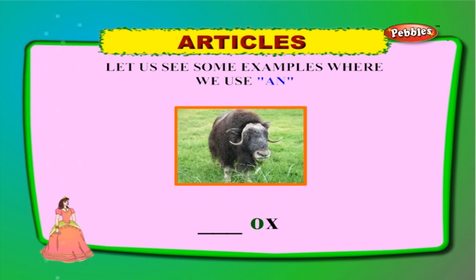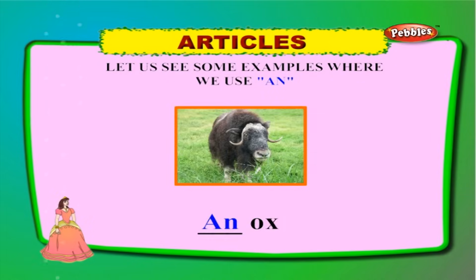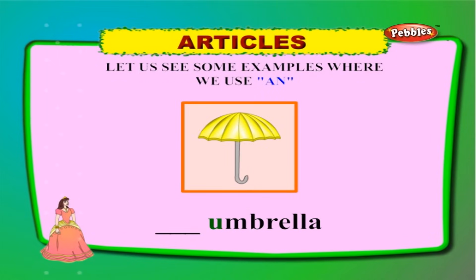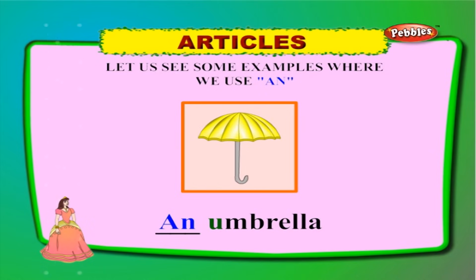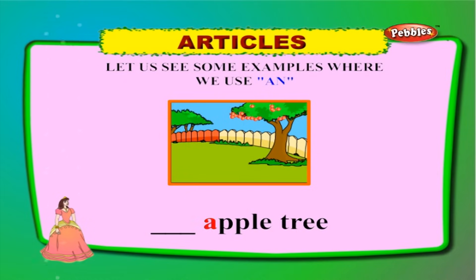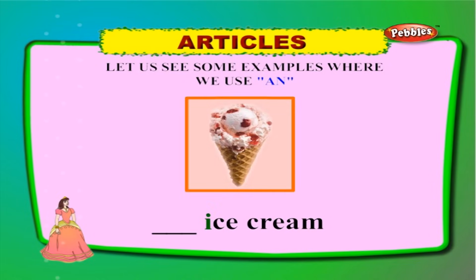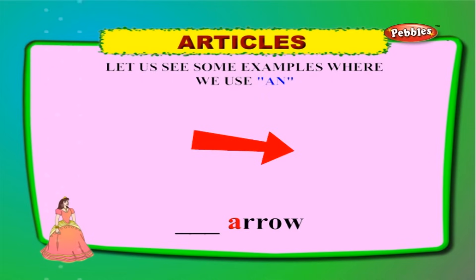Now let us see some examples where we use 'an'. 'An ox' — 'O' is a vowel, so we use 'an'. 'An umbrella' — 'U' is a vowel, so we use 'an'. 'An apple tree' — 'A' is a vowel, so we use 'an'. 'An ice cream' — 'I' is a vowel, so we use 'an'. 'An arrow' — the word begins with 'A', so we use 'an'.